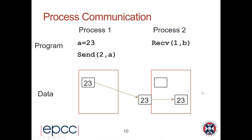Now process 2 can do something interesting: it can say A equals B plus 1, which sets process 2's variable A to 24. It's important to realize that these are completely different processes running on different computers. Just as process 1 has a variable A and process 2 has a variable A, there's no reason why they should have the same value — just because a variable has the same name doesn't mean it holds the same value.